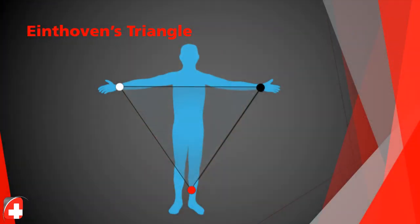Let's talk about Eindhoven's Triangle. Each one of the electrodes has a different purpose, and it can vary based on which lead you're looking at. It could be either positive, negative, or a ground, depending on which view you're using.